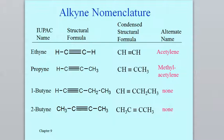Acetylene burns with oxygen to create enough heat to melt steel — that's certainly a major use of that. From ethyne, if you have three carbons, that's based on propane, but because of the triple bond we have propyne. For the butynes you can see we've got two types, just as we do with carbon-carbon double bonds. We have to sometimes use a number to indicate at which carbon the triple bond begins. So in 1-butyne it starts at carbon one, and in 2-butyne it starts at carbon two. And so you would have isomers of pentyne with five carbons.